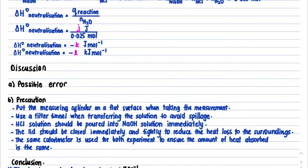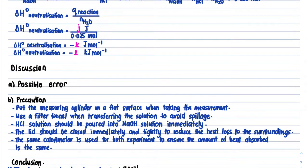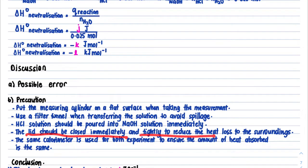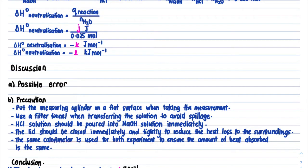For precautions: first, when measuring liquid in a measuring cylinder, place it on a flat surface — on a table, not held in the air. Second, when transferring solution, use a filter funnel to avoid spillage. Third, for Part B, the HCl solution should be put into the NaOH solution immediately. Fourth, when using the calorimeter, close the lid immediately to reduce heat loss. Fifth, use the same calorimeter for both Part A and Part B to ensure the same amount of heat is absorbed.